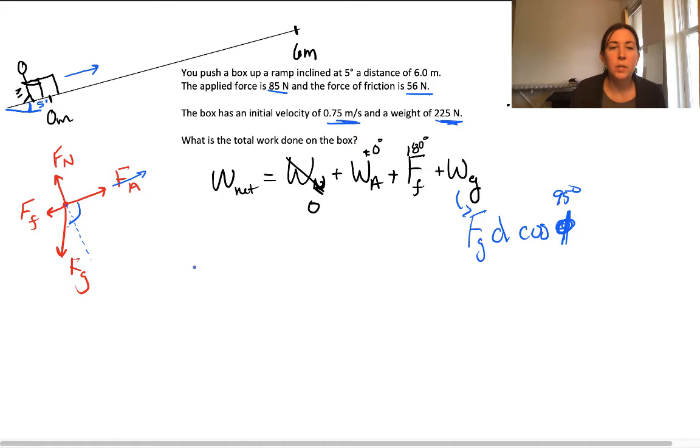So I'm just going to plug all of this stuff in here. Our net work will be equal to our applied force, 85 newtons, times our distance, 6 meters, plus our force of friction, which is 56 newtons, times our 6 meters.